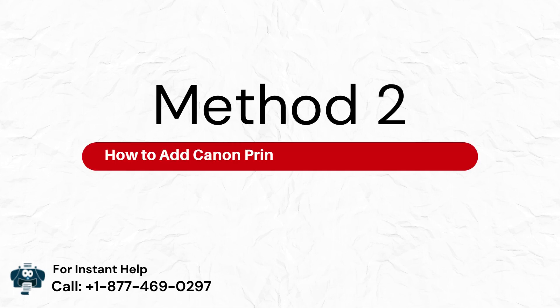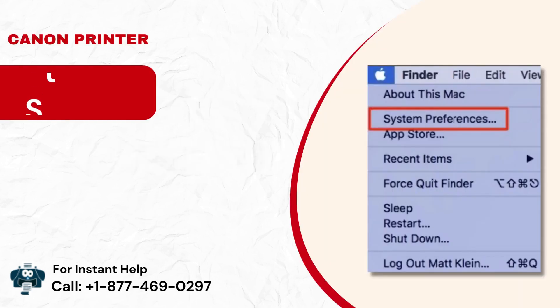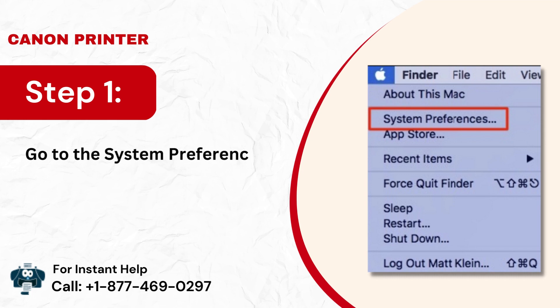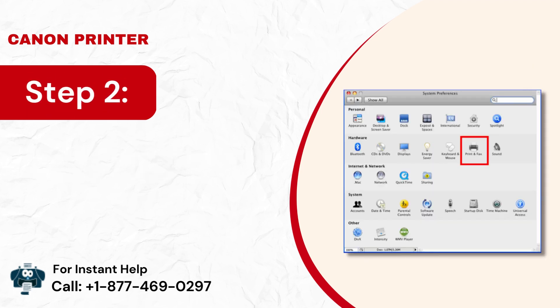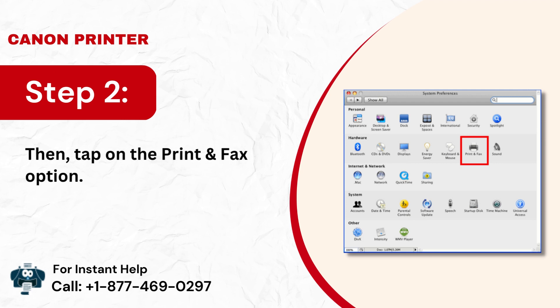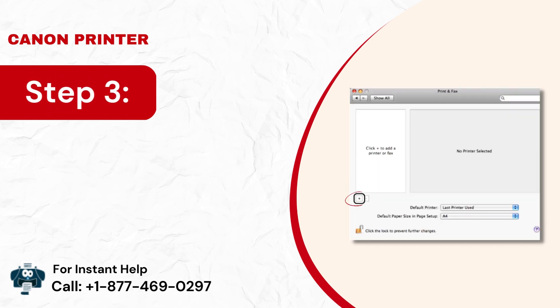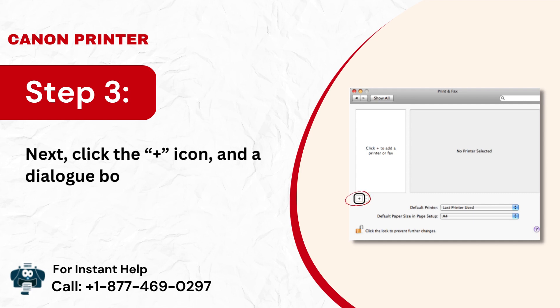Method 2: How to add Canon printer to a Mac OS X 10.5. Step 1: Go to System Preferences on your Mac device. Step 2: Then, tap on the Print and Fax option. Step 3: Next, click the plus icon and a dialog box will open.